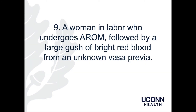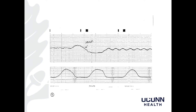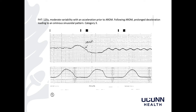Patient 9 is a woman in labor who undergoes artificial rupture of membranes, followed by a large gush of bright red blood from an unknown vasa previa. My read: baseline of 125s, moderate variability with an acceleration prior to the AROM. Following AROM, there is a prolonged deceleration leading to an ominous sinusoidal pattern. This is Category 3. This baby would need to be delivered immediately to save its life.